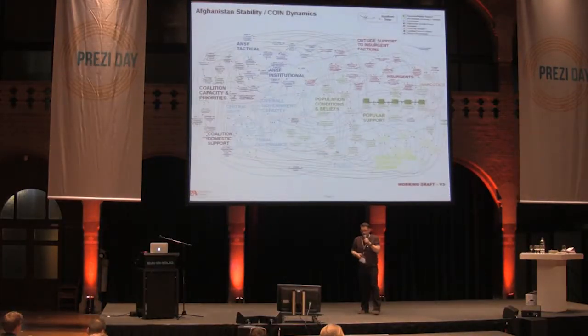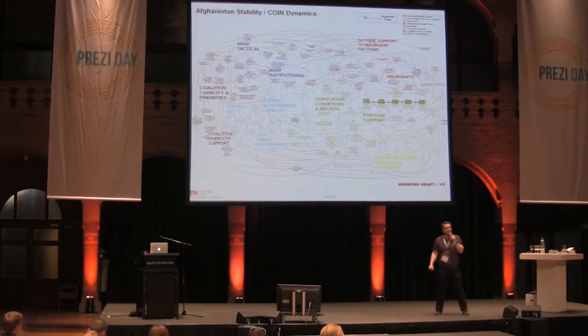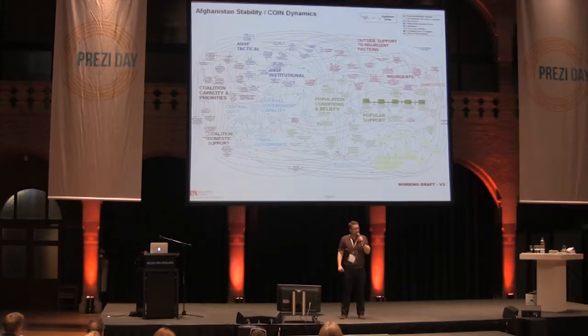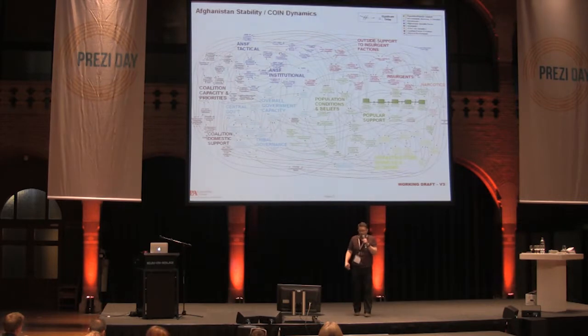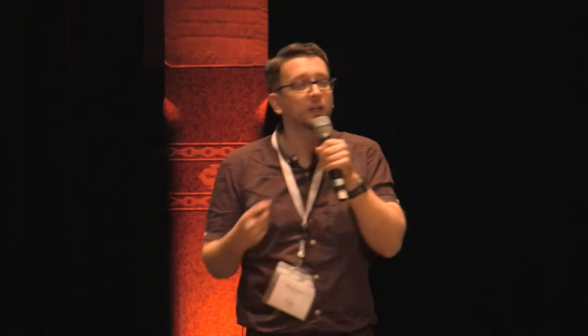This is a bit too much flow. This is an actual slide used by the U.S. military to convey the problems in the war in Afghanistan. And I think it shows you what goes wrong when you get an overview completely wrong — when you zoom out, there are arrows going everywhere and too much density of content.